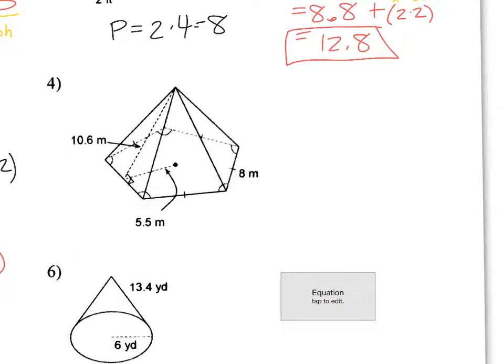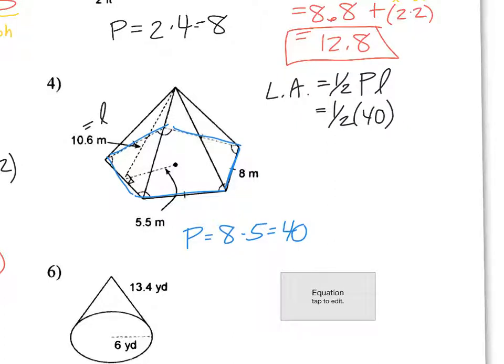Okay. Next one. So lateral area is 1/2 PL. Okay. Here's my L. Perimeter. See the perimeter. This is 8. There's 1, 2, 3, 4, 5 of those. So perimeter would be 8 times 5, which is 40. So 1/2 times 40 times 10.6. So 0.5 times 40 times 10.6 is 212.